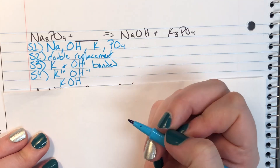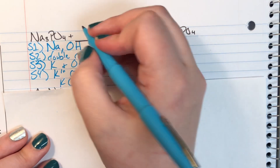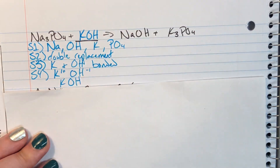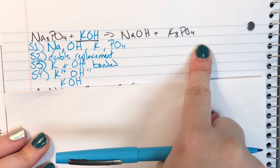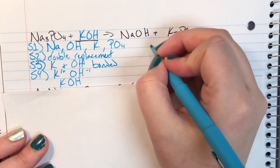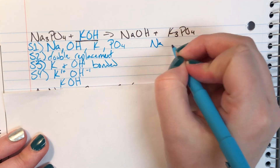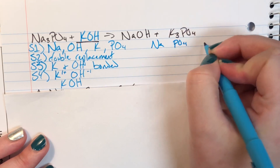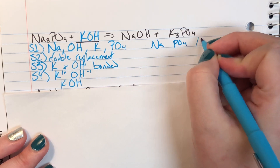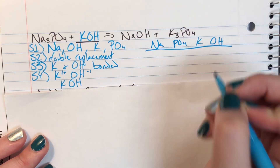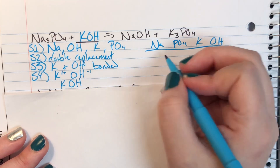KOH is my final compound. I add it to the equation and then balance. The elements I need to balance are sodium, phosphate, potassium, and hydroxide.